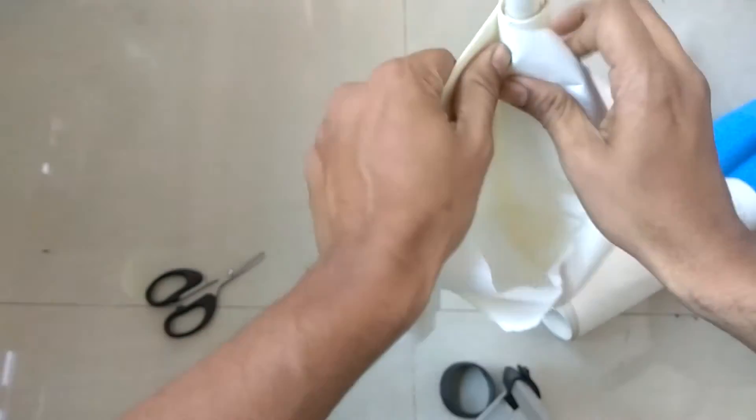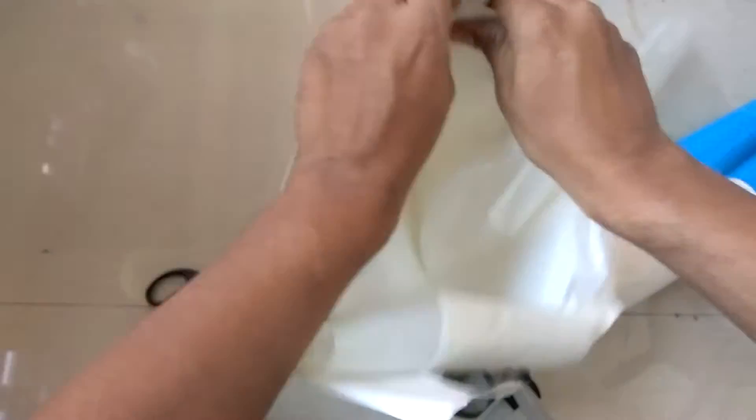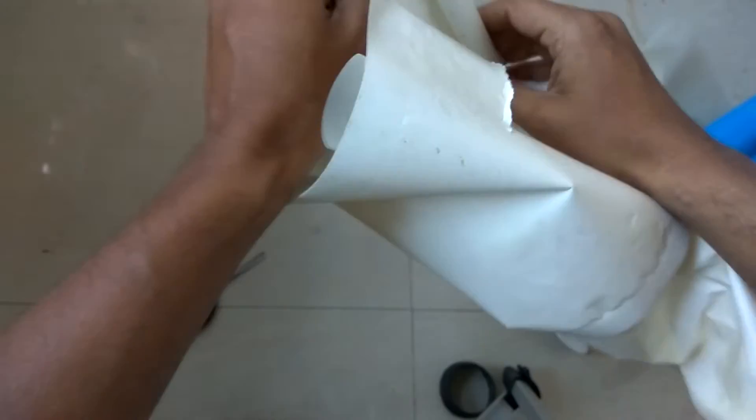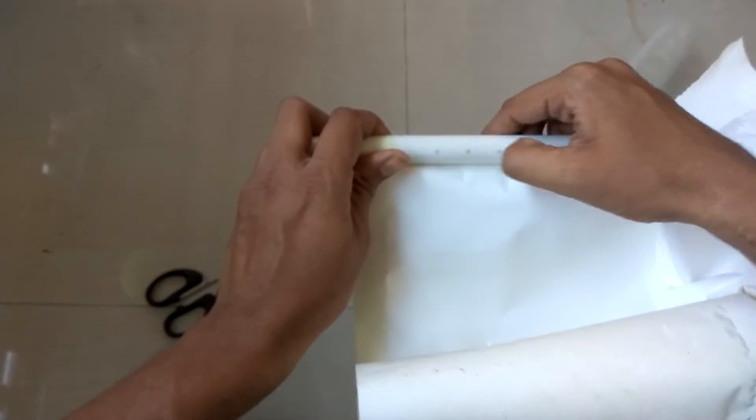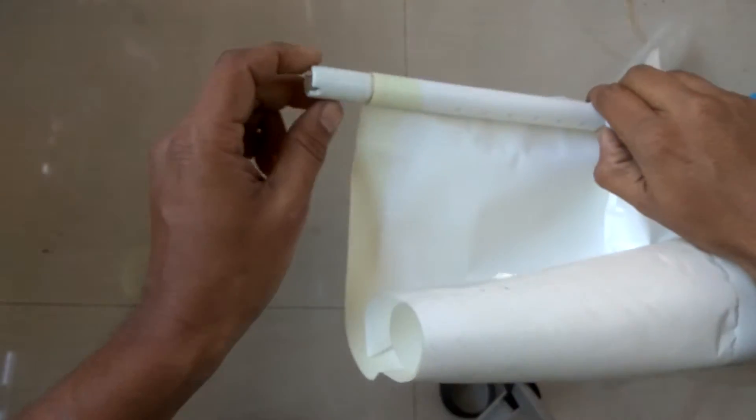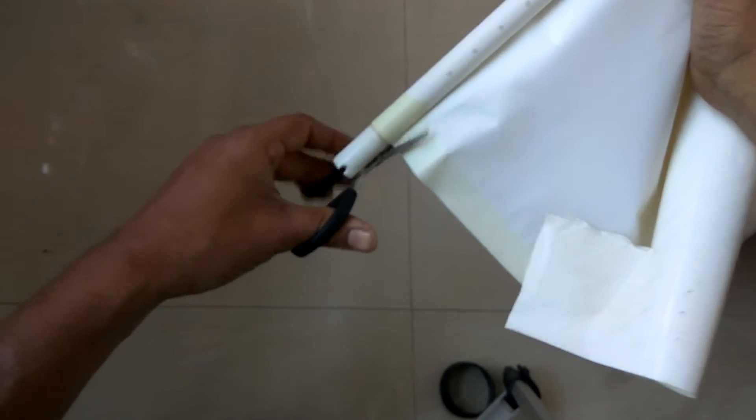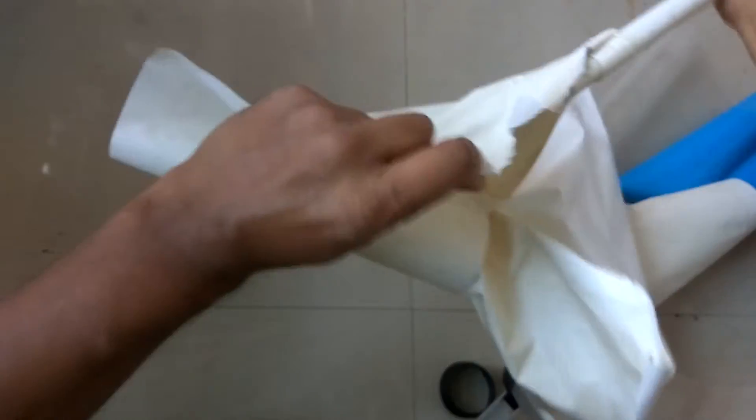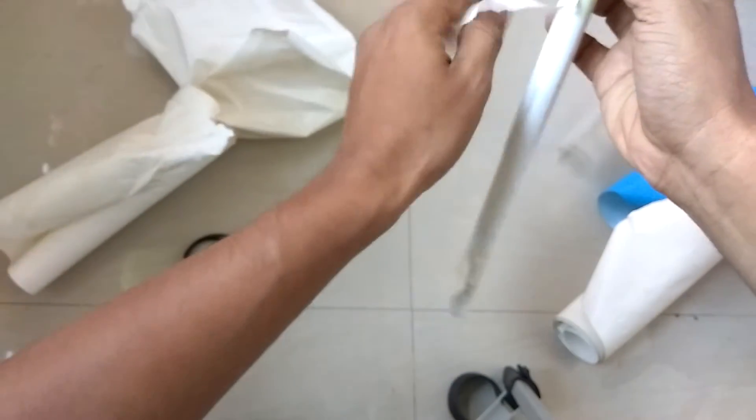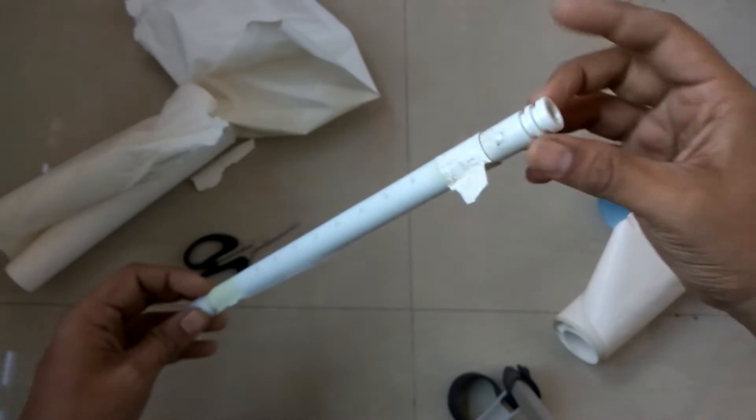So finally what happens is water comes in, flows from this direction towards this pipe. From this mesh here, the final mesh, the product water flows. At this end the product water flows from these small holes as we can see.